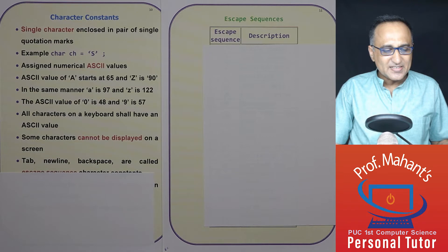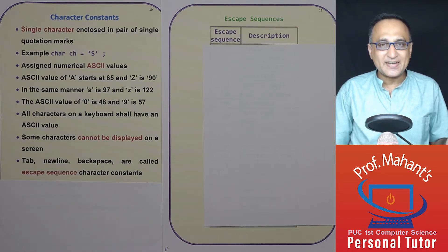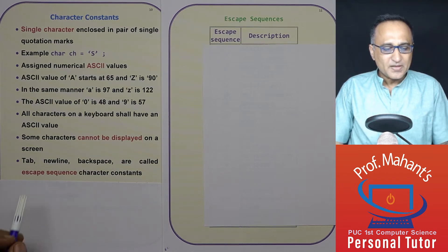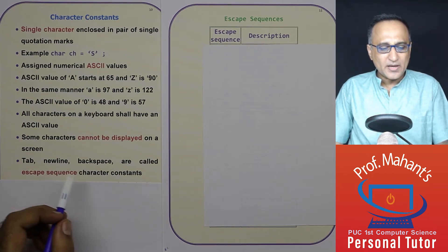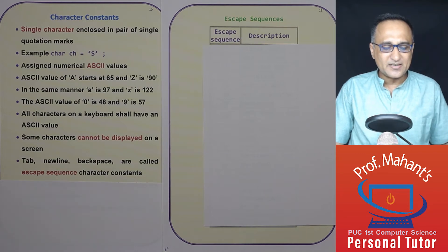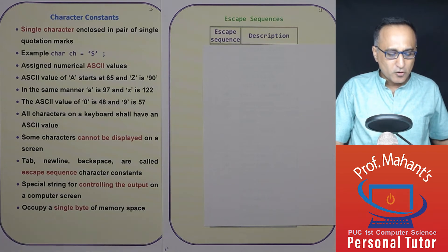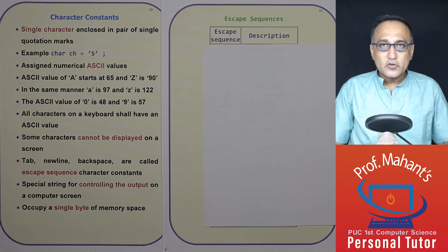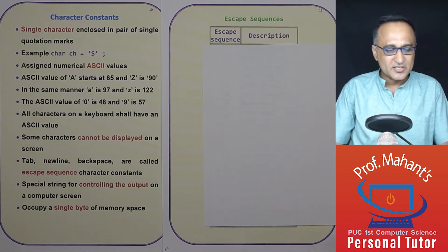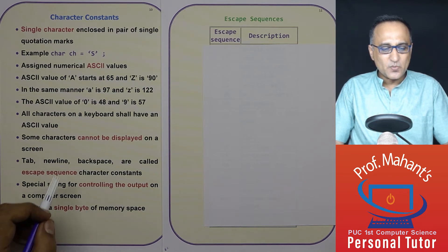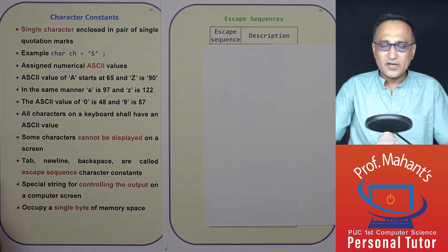Now, there are certain characters like for example the enter key, the backspace, which you use to delete a character, these cannot be displayed or are called as invisible character sequences on your computer. So examples like tab, new line, backspace are called as escape sequence character constants. Now in order to display them or in order to use them, we have to show them in a special way. But any of these characters, whether it is this escape sequence or the normal characters, occupy a single byte of memory.